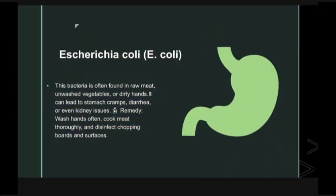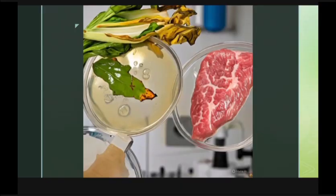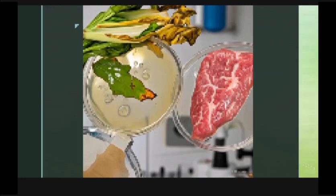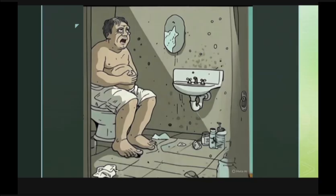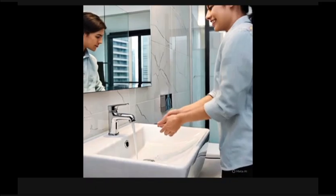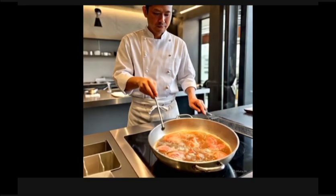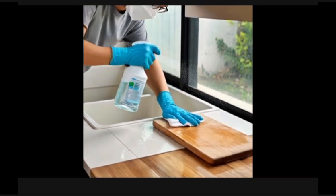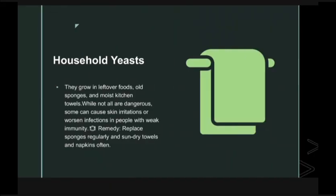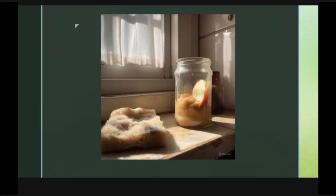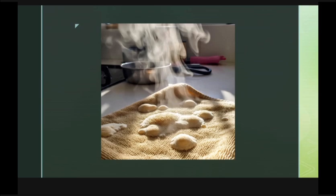Number two: Escherichia coli (E. coli). This bacteria is often found in raw meat, unwashed vegetables, or dirty hands. It can lead to stomach cramps, diarrhea, or even kidney issues. Remedy: wash hands often, cook meat thoroughly, and disinfect chopping boards and surfaces. Number three: household yeasts. They grow in leftover foods, old sponges, and moist kitchen towels.